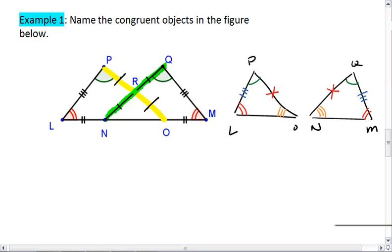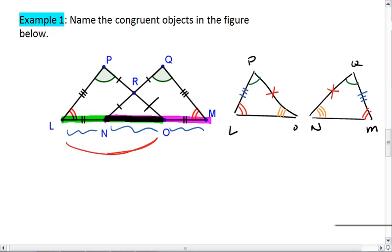And then lastly, looking at side LO and side NO. Well, we know that LN is congruent to OM and that NO is congruent to NO because it's itself. Thus, LO, which is composed of this double dash mark and segment NO, must be congruent to side NM, which is also composed of this double dash mark plus side NO. Meaning that these sides are congruent.